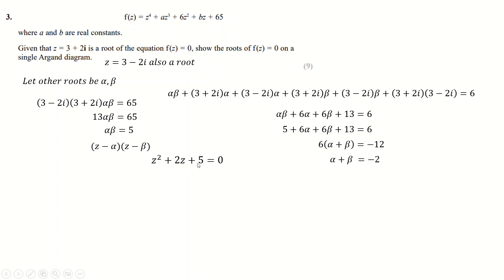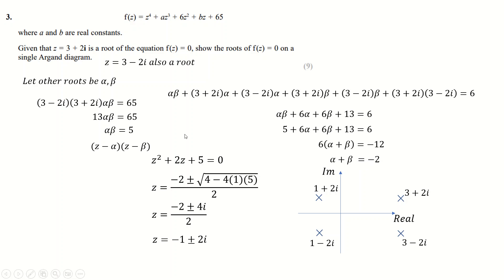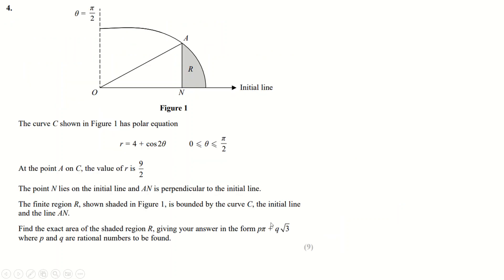We form the quadratic z squared plus 2z plus 5 equals zero, since minus alpha z plus minus beta z gives plus 2z and alpha times beta gives 5. Solving this gives alpha and beta. It doesn't matter which way around. For the sketch, we just draw the real and imaginary axes, label all four roots, and that's what we need to do.